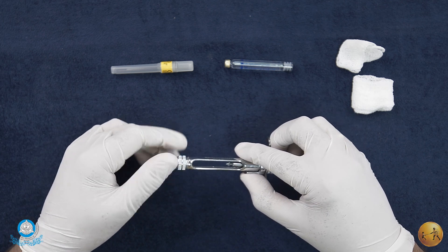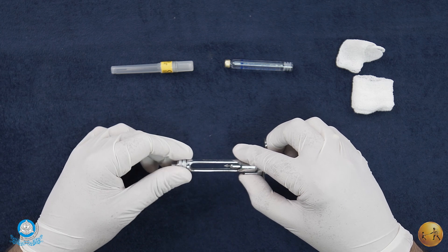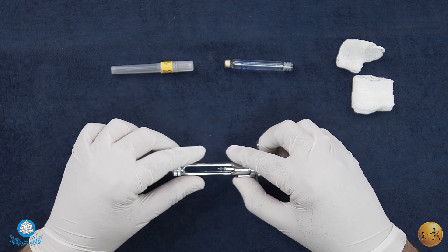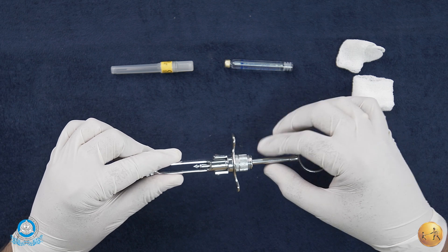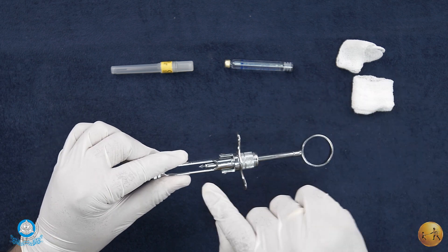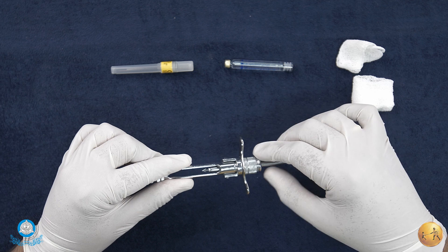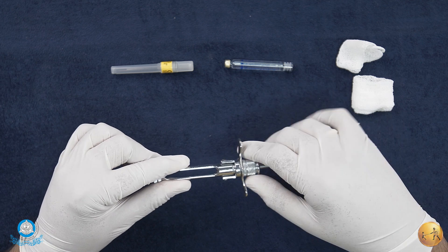We'll show you when we assemble the actual syringe itself. Now here you see the plunger with the thumb ring and a harpoon in between.